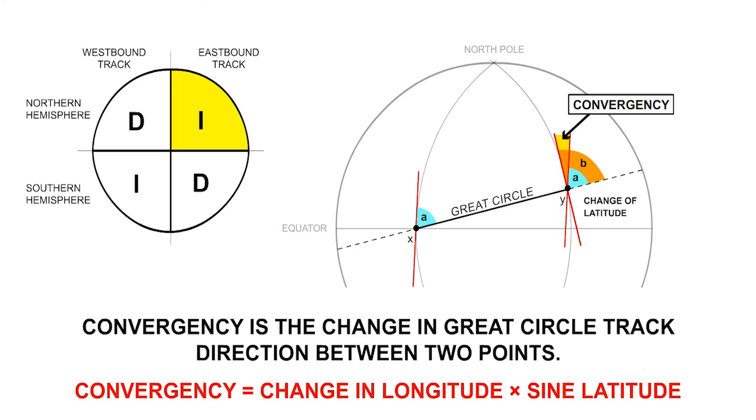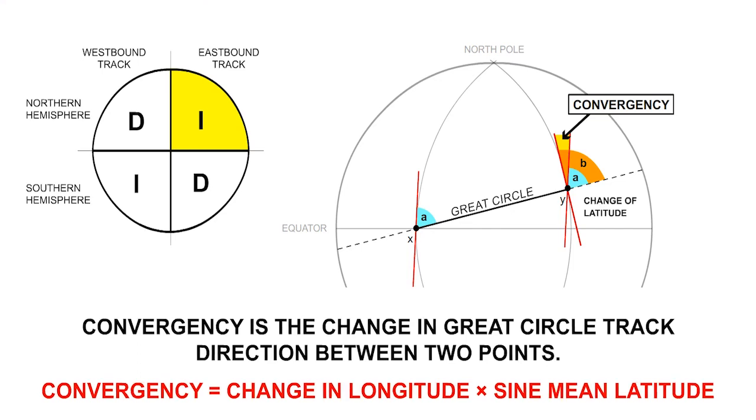Instead, we take the sine of mid-latitude or of mean latitude, which with only two points is the same thing, to give us the formula convergency equals change in longitude times the sine of the mean latitude, where mean latitude is the mean or average latitude between the two points.